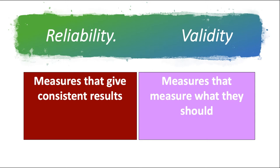Reliability means a measure gives consistent results. When we design a questionnaire, we want to see if the questions are reliable — meaning respondent A understands the question the same way as respondent B. If they understand it differently, the reliability is poor. Validity means the measure actually measures what it should measure. If I ask a question about poverty but that question has no relation to poverty, it is not valid. But if I ask whether someone ate yesterday, that has a relationship with poverty.